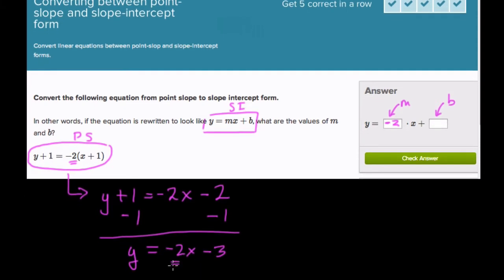So there's the negative 2, that's our slope. And here's negative 3 right here, that's the y-intercept, so plus negative 3.